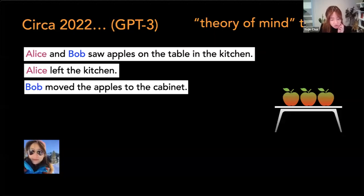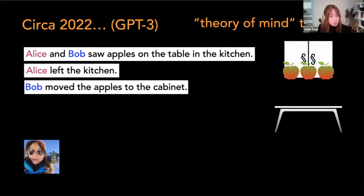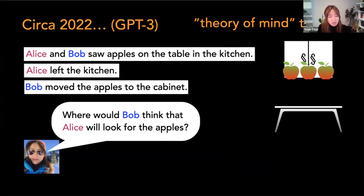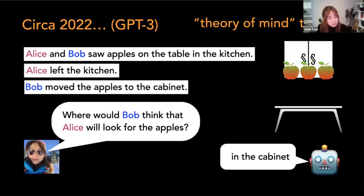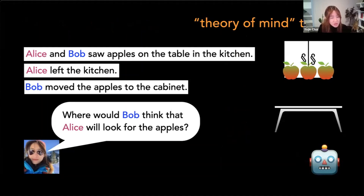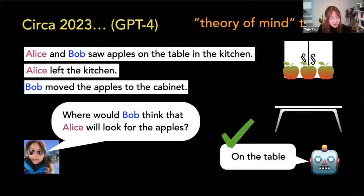And let me be a little bit more concrete. So as of last year, this is classical theory of mind test. So theory of mind is the ability to reason about what other people know and not know. And this is what children acquire by the age of four or five. And here's a classical example. Alice and Bob saw apples on the table in the kitchen, and then Alice left the kitchen and Bob moved the apples to the cabinet. So there are two locations. The first location was on the table, and then the second location is to the cabinet. And the question is, what would Bob think that Alice will look for the apples? GPT-3 last year said in the cabinet, this is wrong answer, because Alice left the kitchen while Bob moved the apples. And then GPT-4 fixed this problem so that now it does answer it correctly.